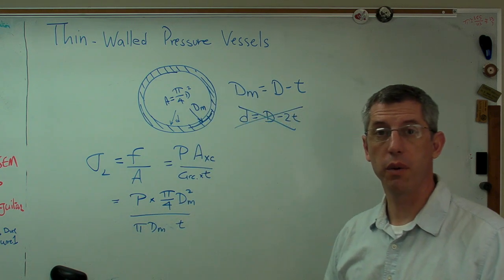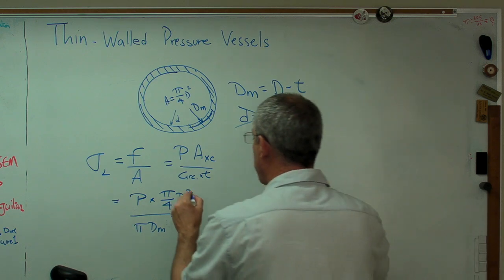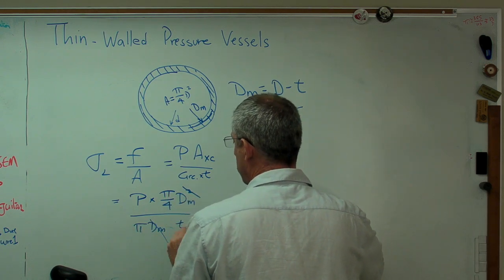All right, so there we go, and a very little bit of algebra will make this work out for us. So, that crosses out, that pi crosses out, and I get P dm over 4t.